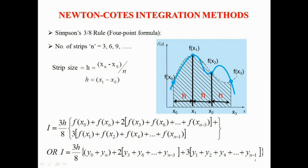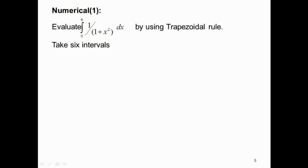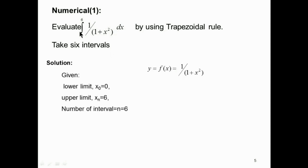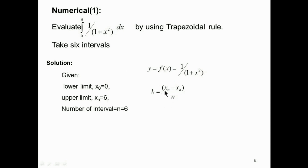Now we will solve some numericals based on these formulas. The first numerical: evaluate the integral from 0 to 6 of 1/(1 + x²) dx using the trapezoidal rule, taking 6 intervals. From the given data: lower limit x0 = 0, upper limit xn = 6, number of strips n = 6, and f(x) = 1/(1 + x²), so y = f(x) = 1/(1 + x²). Strip size h = (xn − x0)/n = (6 − 0)/6 = 1.